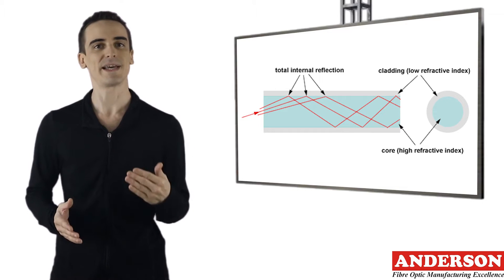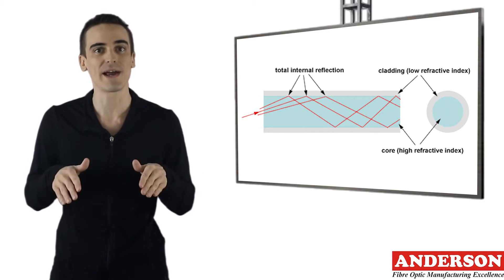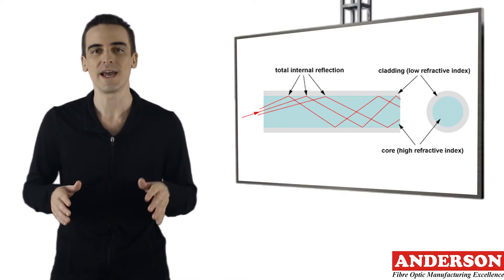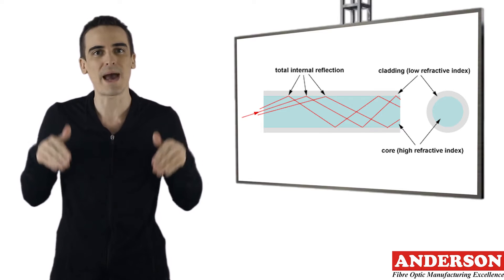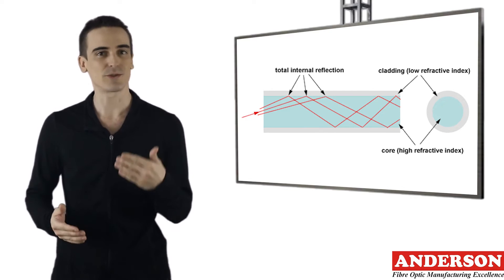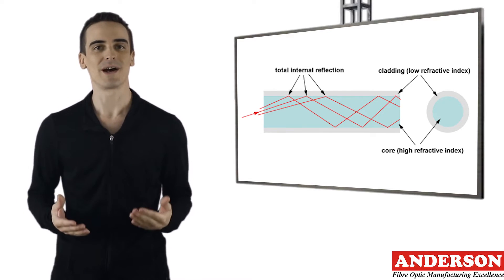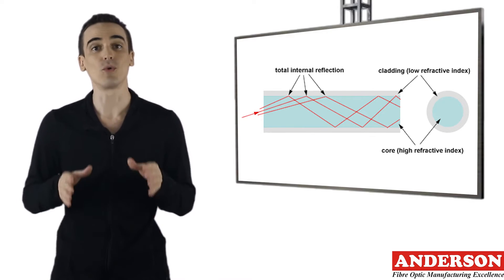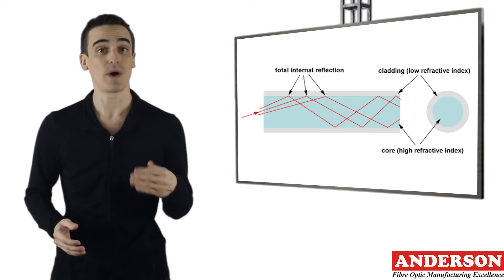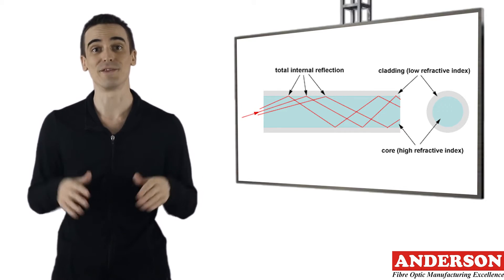But if light hits glass at a really shallow angle of less than 42 degrees, it reflects back in again as though the glass were really a mirror. This phenomenon is called total internal reflection. It's one of the things that keeps light inside the fiber.